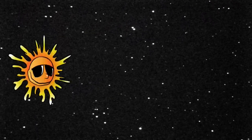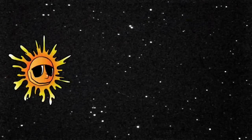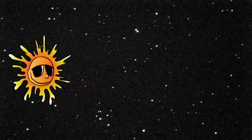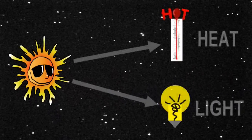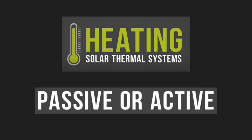Nature has provided us with an abundant source of energy, i.e. the Sun. The Sun provides us energy in two ways: heat and light. To capitalize on the heat energy provided by the Sun, we use Solar Thermal Systems, which could be classified into two ways: active and passive.